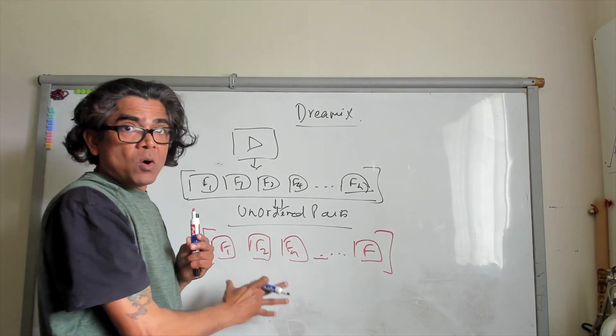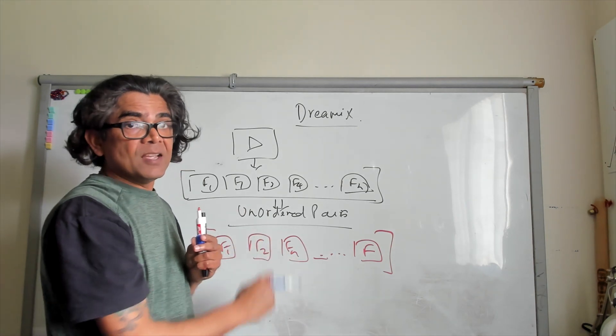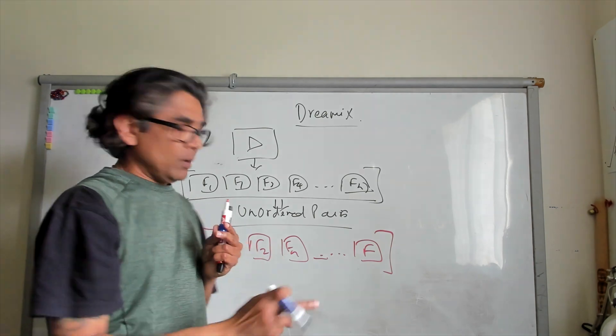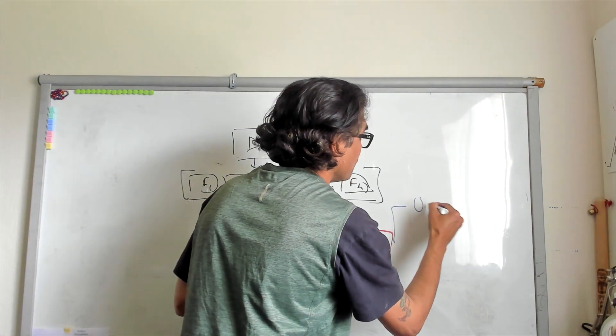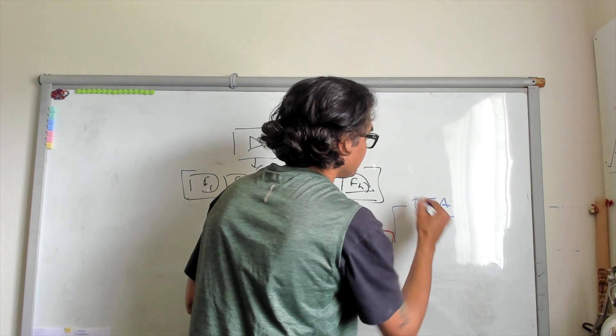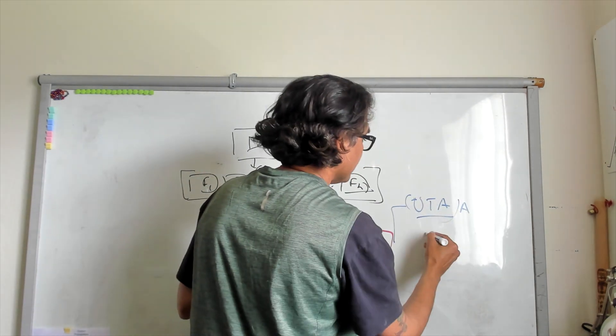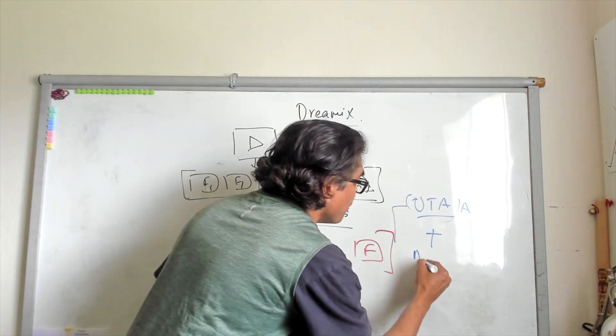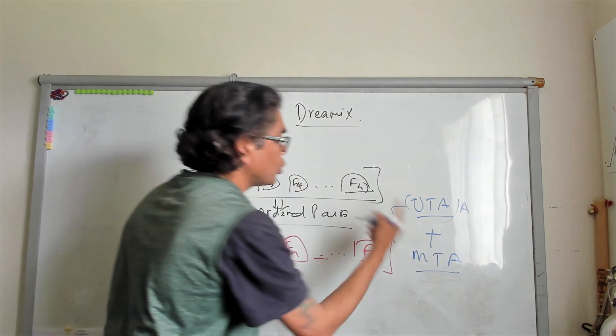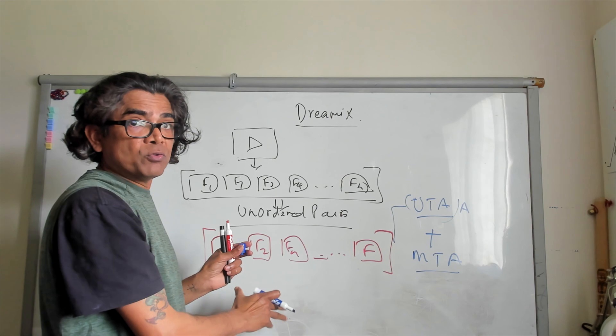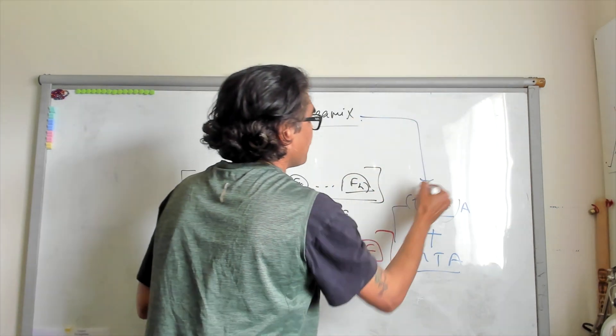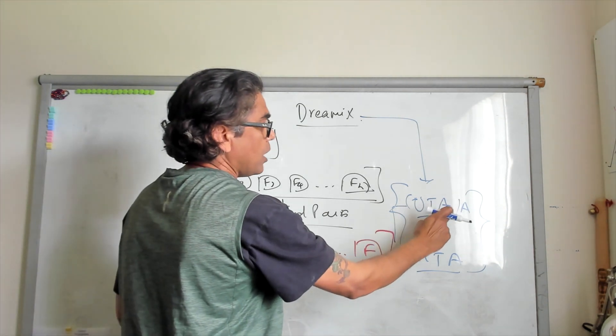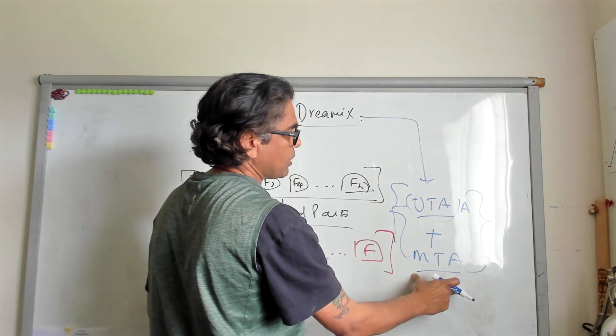By using the unordered pair of these images and then applying the mixed video image method, first is the unmasked temporal attention in phase one, and then in the same order of image you are going to apply the masked temporal attention. So two different fine tuning methods are used to create the Dreamix based diffusion video editing, combining the unmasked temporal attention with the masked temporal attention.